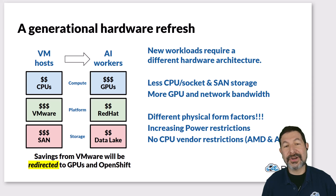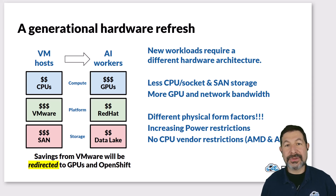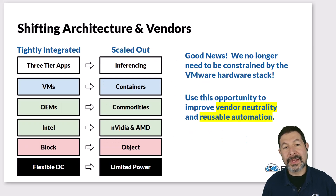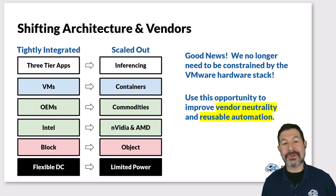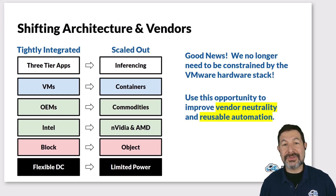There's a generational hardware refresh in process in which virtualization hosts with expensive CPUs, software licenses, and SANs are being reallocated into AI workers and container workers. That allows you to reallocate what money you're spending — not necessarily reduce your IT spend, but spend it more effectively where you get the biggest ROI, whether that's in GPUs or data storage. This is a new chance to make better use of your IT resources. We can shift architectural designs from tightly integrated systems into a more scaled-out design where we can mix and match different types of systems and vendors, managing that very effectively with tools like Digital Rebar as consistent, repeatable automation.